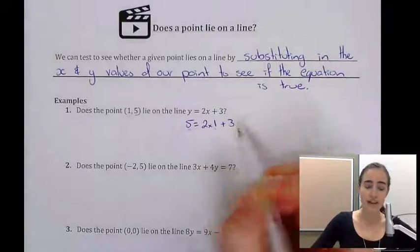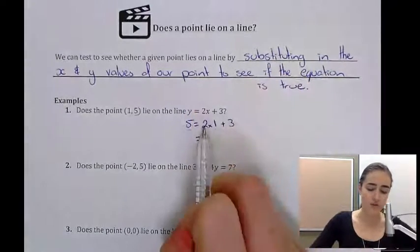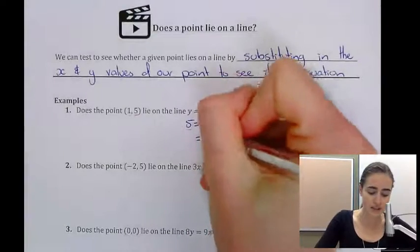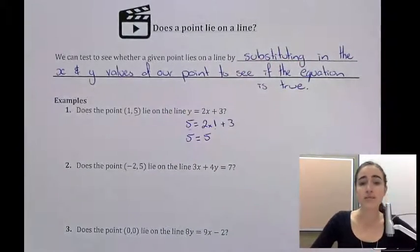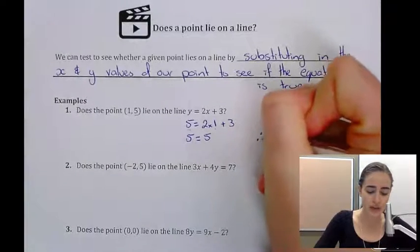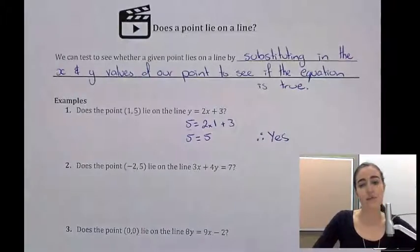If we simplify this right-hand side of that equation now, 2 times 1 is 2 and 2 plus 3 is 5. Because we end up with a statement that says 5 equals 5, which is obviously true, it's therefore yes, the point lies on that line.